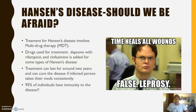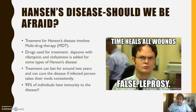Should we be afraid? Well, there is treatment for Hansen's disease. It involves multi-drug therapy — MDT — using a combination of Dapsone, rifampicin, and clofazimine. A combination of these drugs helps tackle the disease. This treatment lasts about two years, and if you can pursue through it, you are able to be cured. Also, 95% of individuals have natural immunity to the disease, so that's a good thing.